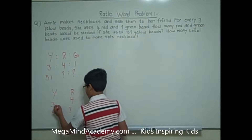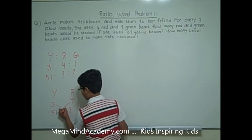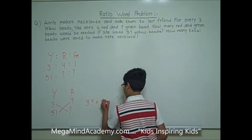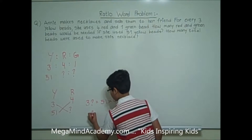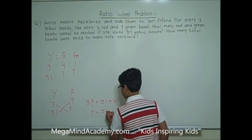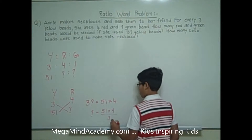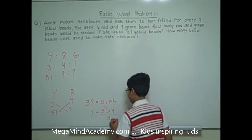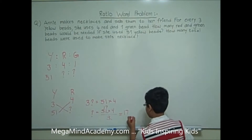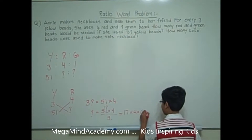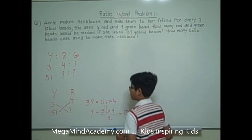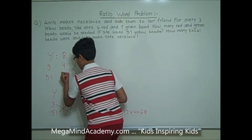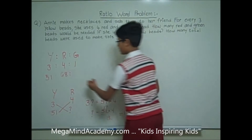We need to multiply 3 with the unknown and 51 with 4. We get: 3 times question mark is equal to 51 times 4. Question mark is equal to 51 times 4 over 3. 3 goes into 51, 17 times. So we get 17 times 4, which is equal to 68 red beads. There are 68 red beads.